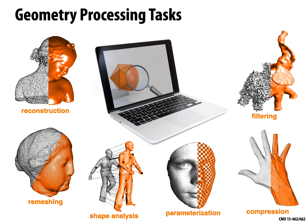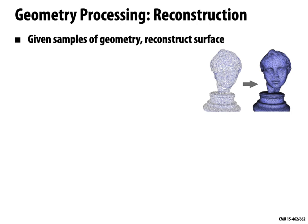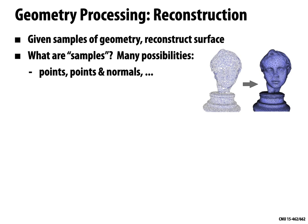One basic task is reconstruction. Given some samples of the geometry — maybe a point cloud — you'd like to reconstruct a surface, turning that point cloud into a polygon mesh or a level set. Samples could be just points, or richer information like points and normals. You might also have information from photographs giving color and occlusion data, or line density integrals from medical imaging like MRI or CT scans measuring total material density along a line through space.